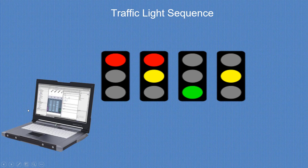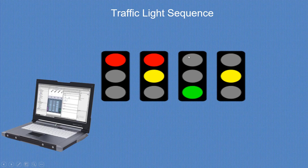In order to program a traffic light sequence in a PLC, you need to understand a few things clearly. The traffic light sequence is: first, red would be on for some time; then red and yellow would both be on for some time; then red and yellow would be off and green would be on for some time; and after that yellow would be on for some time.